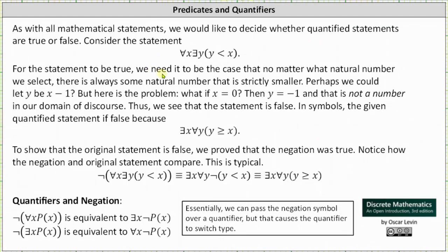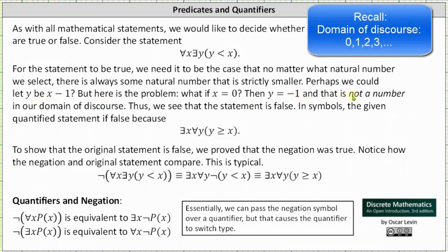For the statement to be true, we need it to be the case that no matter what natural number we select, there's always some natural number that is strictly smaller. Perhaps we could let y be x minus 1, but there is a problem. What if x equals 0? Well, if x equals 0, then y equals negative 1, and that is not a number in our domain of discourse.